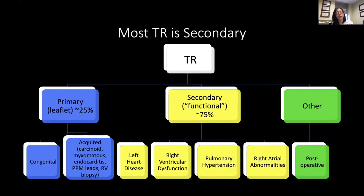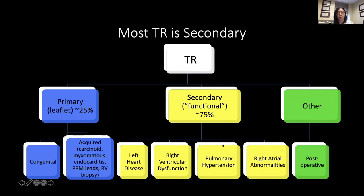Most TR is actually secondary. The case I presented is a minority — about 25% of people will have primary leaflet abnormalities causing their tricuspid regurgitation, and many of those will be congenital. Acquired primary leaflet causes include carcinoid, myxomatous disease, endocarditis — which is large and increasing — and pacemaker leads. For the transplant population, RV biopsy is also a cause. The secondary or functional regurgitation is seen in patients who go for surgery with mitral regurgitation plus tricuspid regurgitation, or aortic stenosis with tricuspid regurgitation.